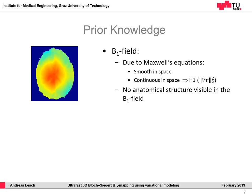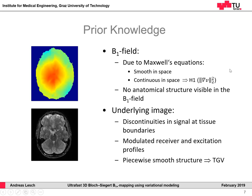What prior knowledge do we have? First, about the B1 field: due to Maxwell's equations, we know that it has to be smooth and continuous in space, and no anatomic structure should be visible in the B1 field. This property can be easily enforced using the H1 regularization, where the squared L2 norm of the image gradient is penalized. For the underlying image, we know that some discontinuities appear at tissue boundaries, and the signal is modulated with receiver and excitation profiles, leading to a piecewise smooth appearance — which can be enforced using the total generalized variation regularization.